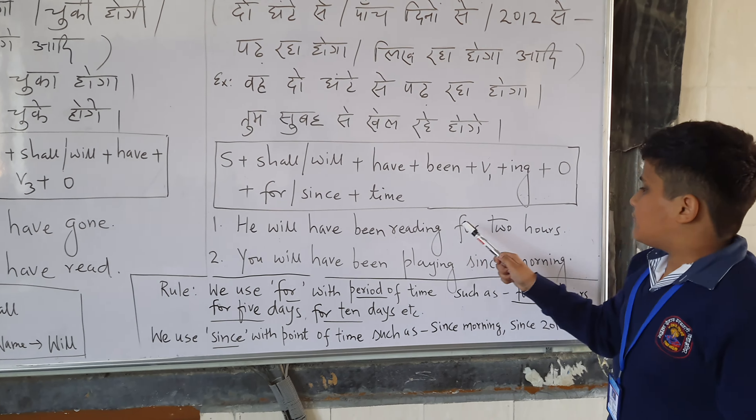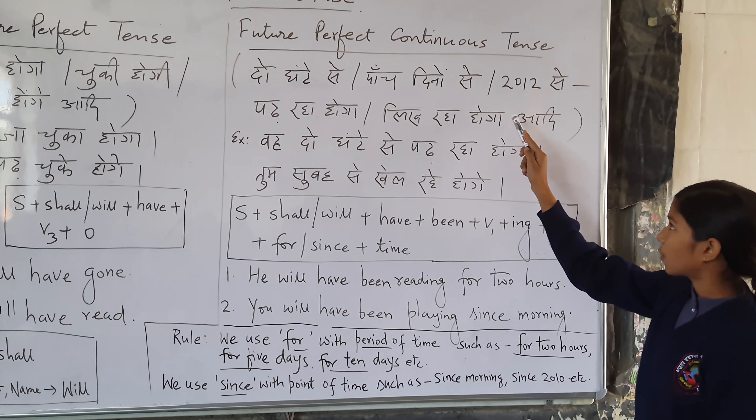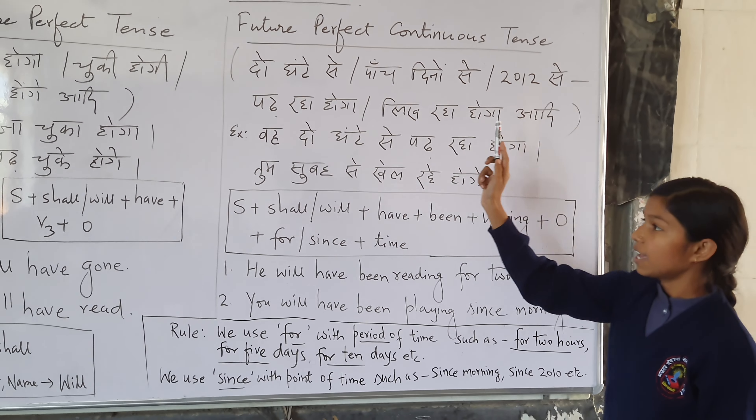Rule: We use 'for' with a period of time, such as for 2 hours or for 10 days. We use 'since' with a point of time, such as since morning or since 2006.